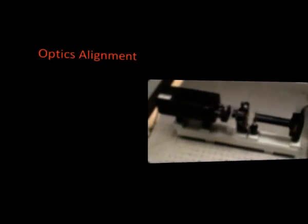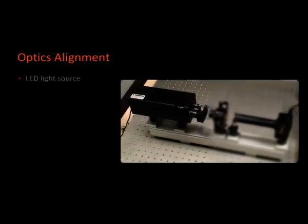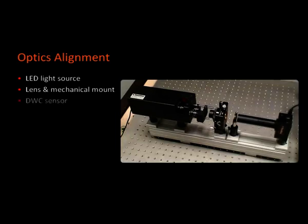For this experiment, we use a 635-nanometer LED point light source producing a point source of 100 micrometers, a lens, and a DWC sensor with a diaphragm.